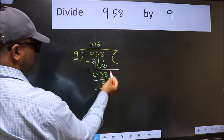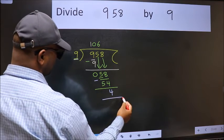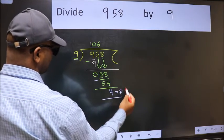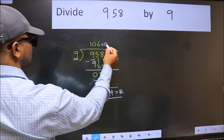No more numbers to bring it down. So we stop here. This is our remainder. And this is our quotient.